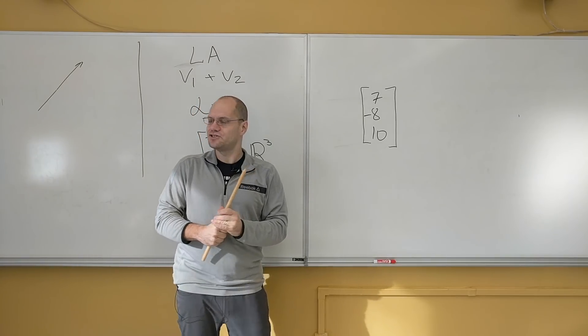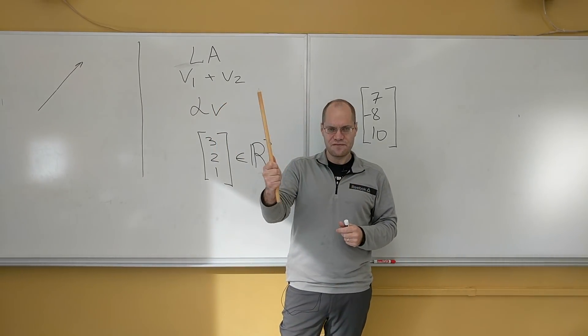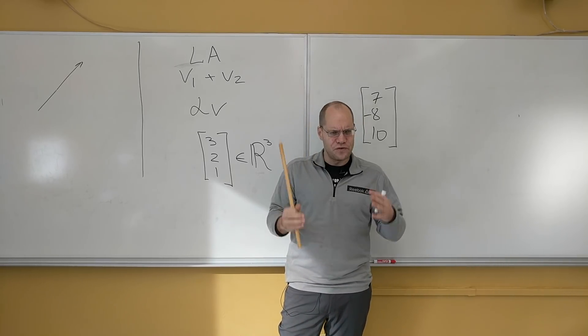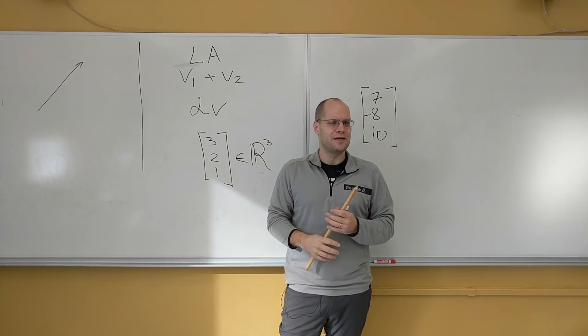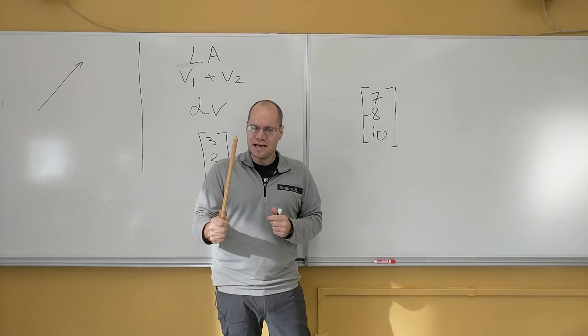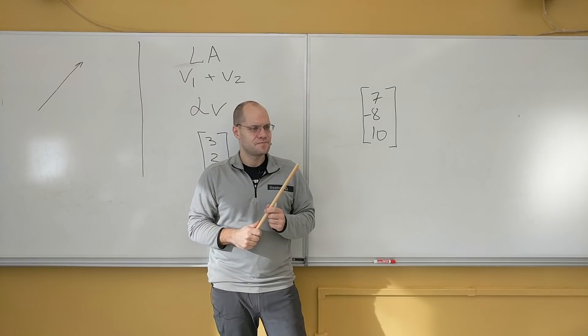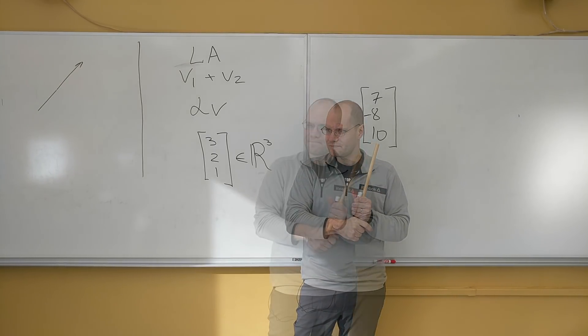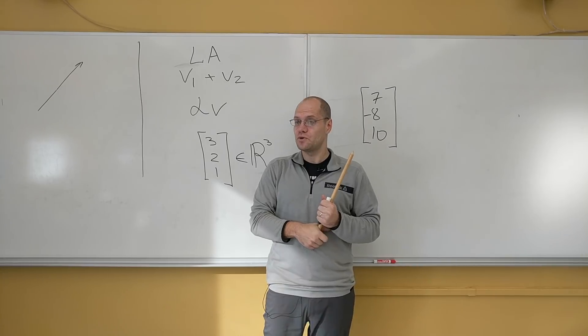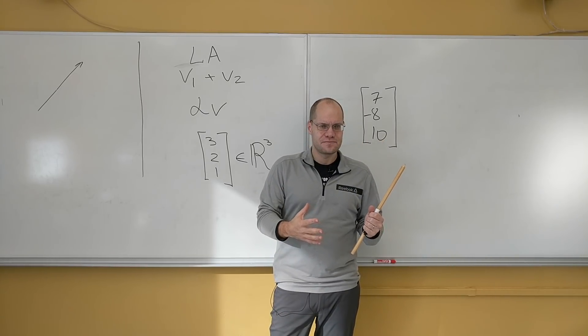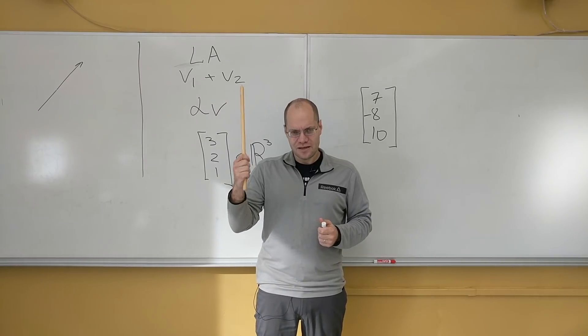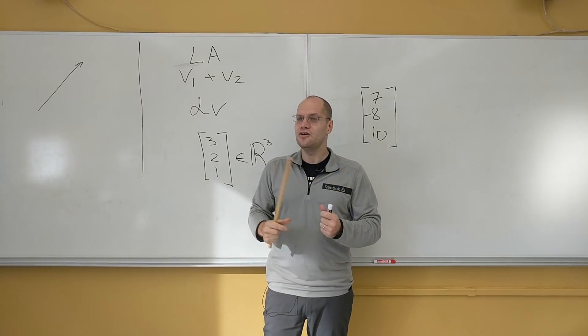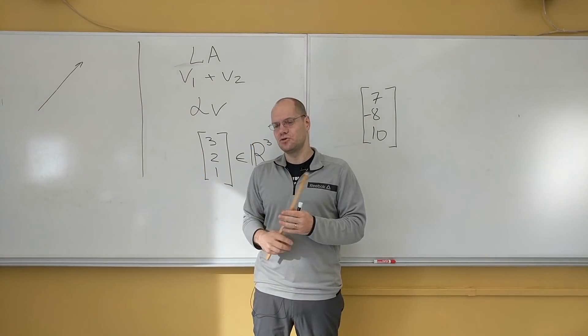Okay. For us, a geometric vector, to repeat myself one more time, is a physical object like this. And what I want you to really focus on, the habit that I want you to break, is immediately introducing a basis and thinking of this object as being equivalent to a set of three numbers. So try to break that tendency. Because when you do that automatically, you're sort of stripping this object of a lot of beautiful properties that it intrinsically has. And you might forget and never get those properties back.